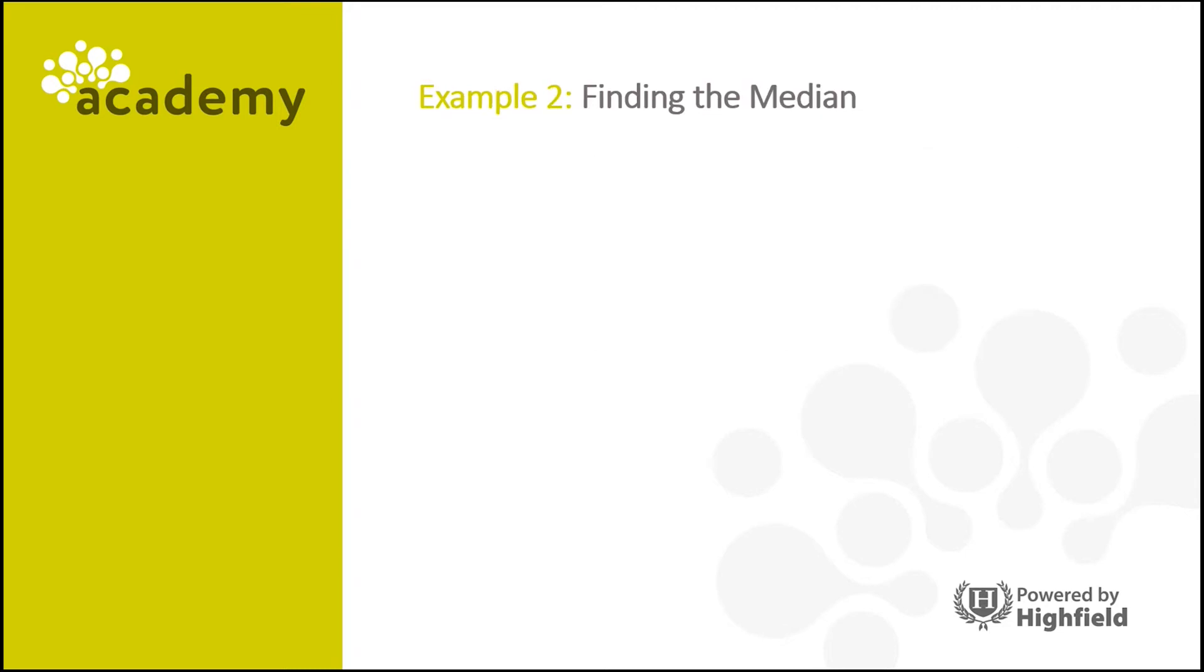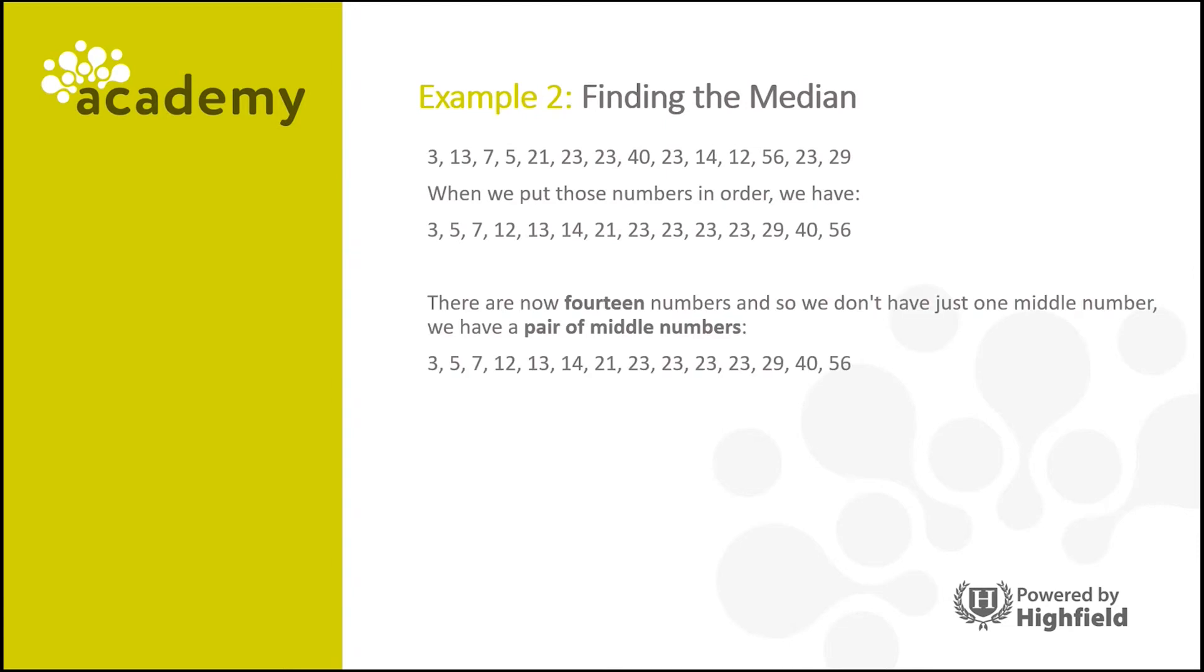So here's another example for finding the median. So here's our data set and when we put those numbers in order again, this is what we have. Now this time there are 14 numbers, so we don't just have one middle number, we actually have two or a pair of middle numbers.